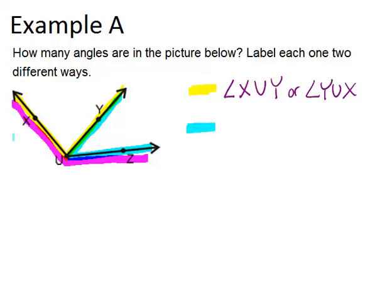So going to the blue angle. Again, we want to use three letters. Guiding ourselves around the angle, we see that we hit the three points of Y, U, and then Z. So angle Y, U, Z. Or angle Z, U, Y. Depending on which order we went, either one is fine.